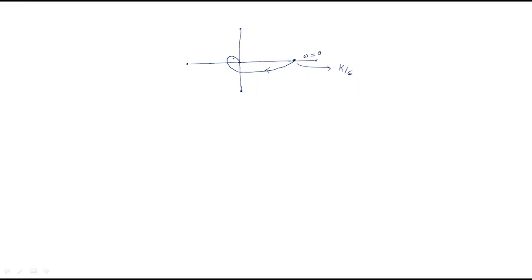The plot starts here and ends here. To get the Nyquist plot we must draw the exact replica of the polar plot. So the replica starts at ω = 0 and ends at ω = ∞, mirroring the original curve about the real axis.